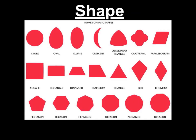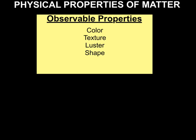Shape is the next observable property of matter. Tires on our vehicles are circles, stop signs are octagons, and tiles on the floor might be squares, rectangles, or even hexagons. Everyday objects have a shape. Please add shape to your observable properties chart.